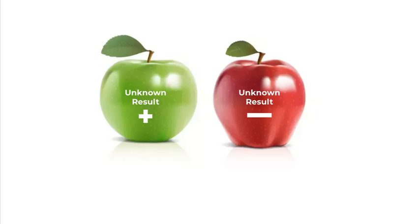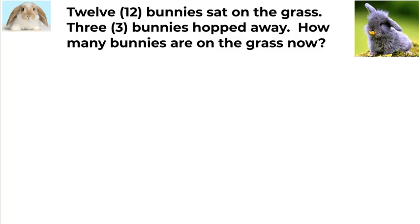Let's look at another add-to, take-from problem, another unknown result problem. But this time, we're going to look at one where the change involves subtraction. Twelve bunnies sat on the grass. Three bunnies hopped away. How many bunnies are on the grass now?